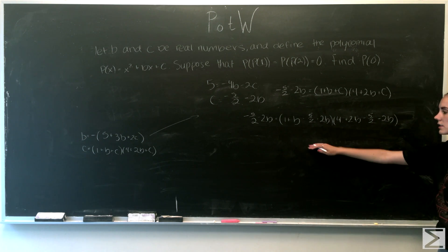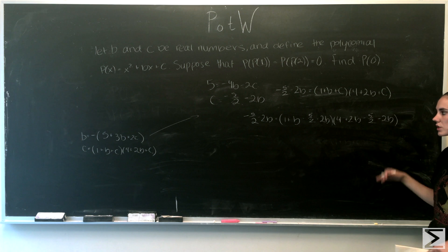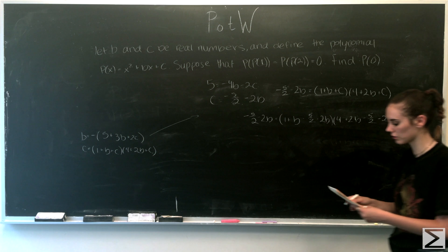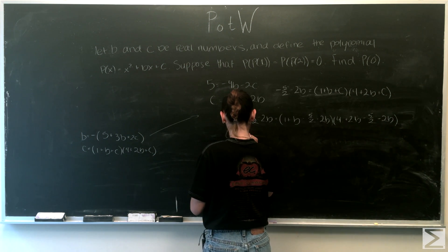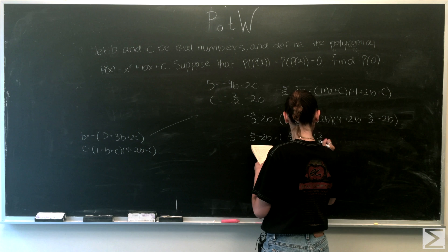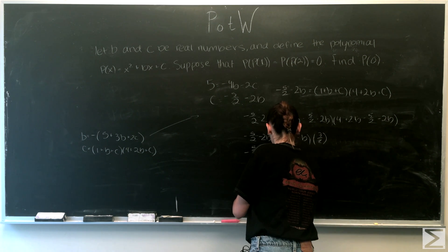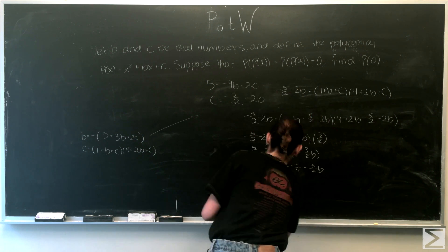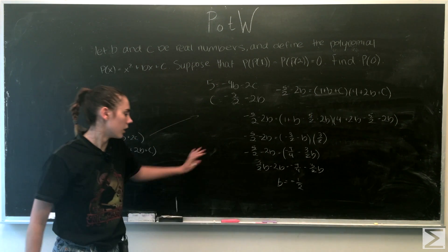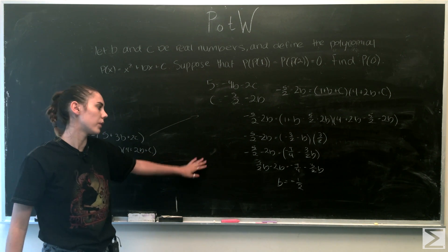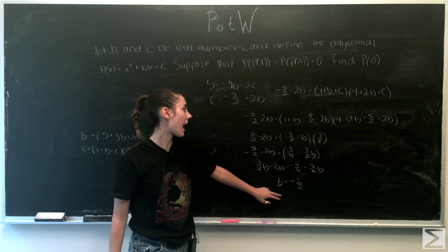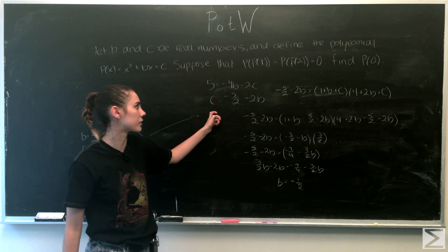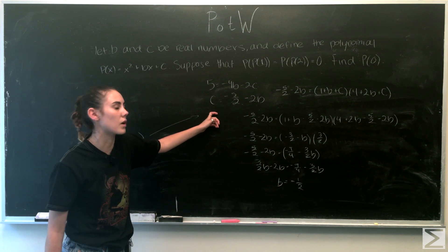Plugging in c and doing the algebra, after adding and subtracting terms, we eventually get that b = −1/2. Using this value of b, we can now plug back into c = −5/2 − 2b to solve for c, and then find p(0).